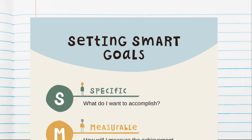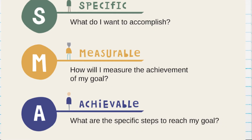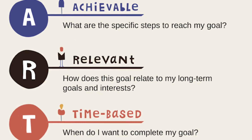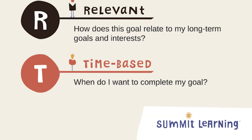Here are some ways that you can achieve SMART goals — I would recommend putting this into your notes as well. First, be specific: what do I want to accomplish? Next, make sure your goal is measurable: how will I measure the achievement of my goal? Next, make sure your goal is achievable: what are the specific steps to reach my goal? If I plan it out in advance, I have a better chance of actually getting it done. Ask yourself if the goal is relevant: how does it relate to my long-term goals and interests? Finally, make sure your goal is time-based: when do I want to complete my goal?